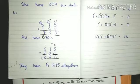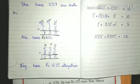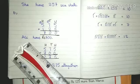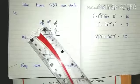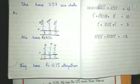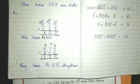Ali ke paas 125 rupay Maria se zyada hai, to hum pehle malum karenge ki Ali ke paas kitne rupay hain. Hum 575 aur 125 ko add karenge to hume pata chal jayega ki Ali ke paas is waqt kitne rupay hain.